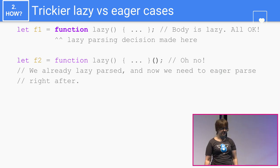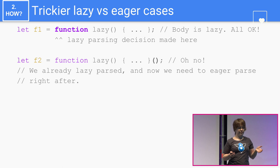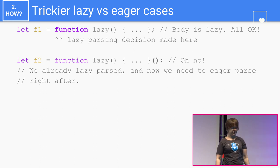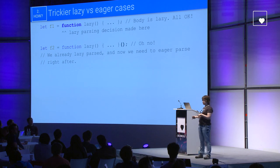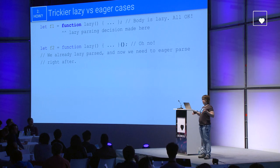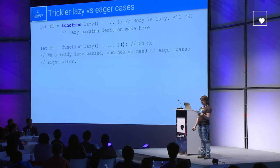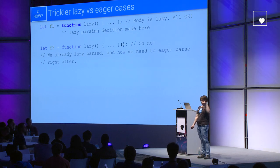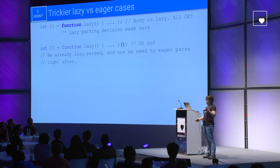Here are some trickier lazy versus eager cases. The problem is that we need to make the decision on which parser to use before we see the function body or anything that follows it — basically when we see the function token. In the first example, we assign a function to a variable; there is no paren before it, so we lazy parse it. The second example looks just like the first except we call the function and assign its return value, but we cannot know that when making the decision, so we also lazy parse it. When that line executes, we need to eager parse it right after — it was the wrong decision, but we just couldn't know.